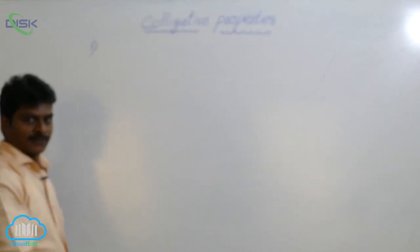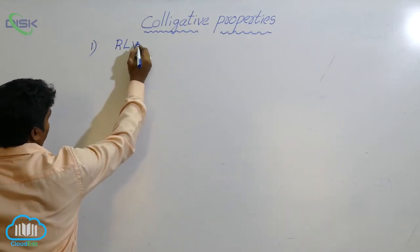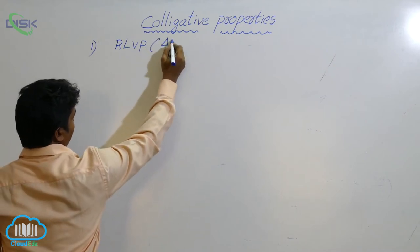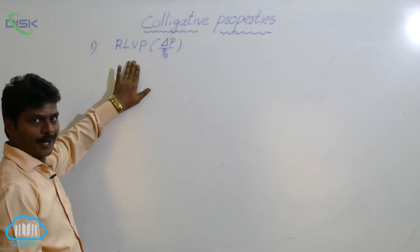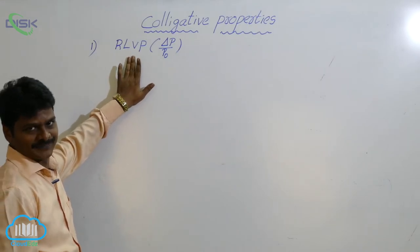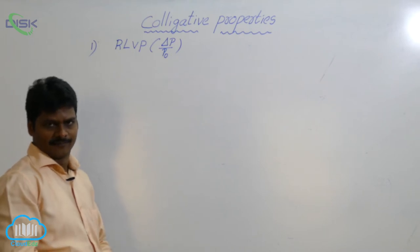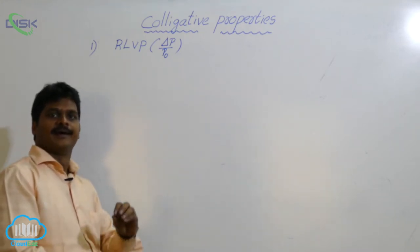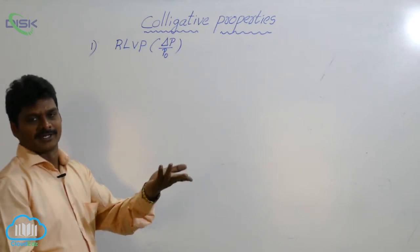Let us discuss the first colligative property: Relative Lowering of Vapor Pressure, written in short as RLVP. It is denoted by ΔP/P₀. When we dissolve a non-volatile solute in a volatile solvent, its vapor pressure decreases. The difference between the vapor pressure of pure solvent and that of the solution is called lowering of vapor pressure. The ratio of this lowering to the pure solvent vapor pressure is called RLVP.